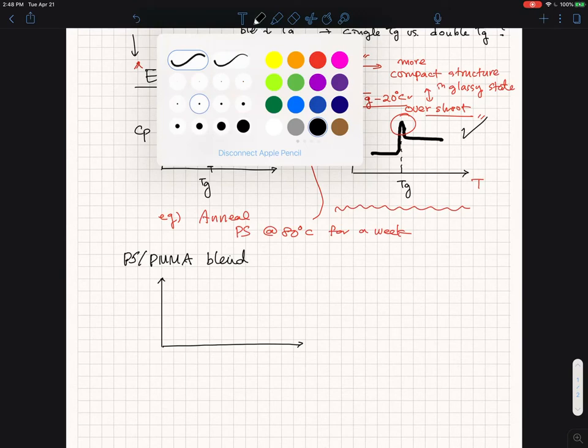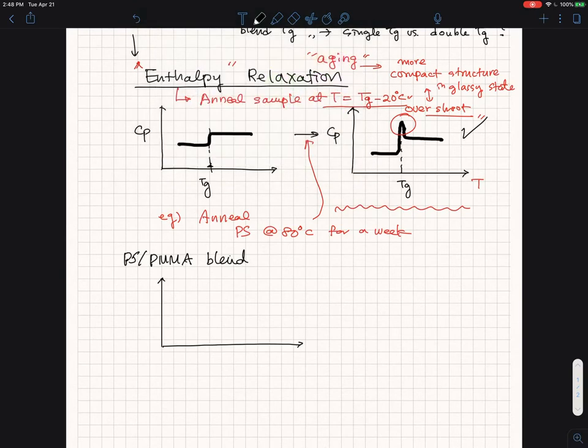Let me do a better drawing. So you are seeing the TG, and you are seeing the TG. That will be your hope for capturing one TG or the second TG from the PS and PMMA. This will be a temperature, this is your heat capacity or heat flow for this blend.